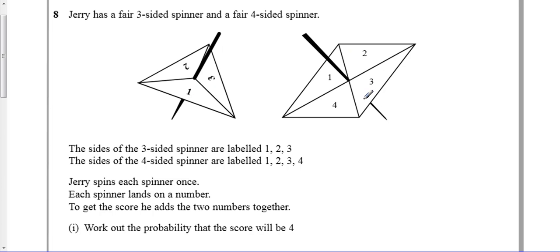They're both fair, so they both have an equal chance of a number coming up - 1, 2, or 3 on this one, and an equal chance of 1, 2, 3, or 4 on this one. To get a score, he adds them up together. So he rolls both and adds them up.